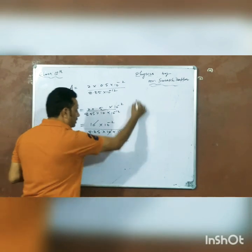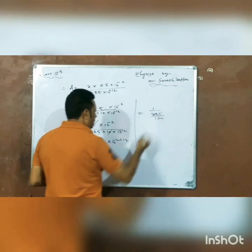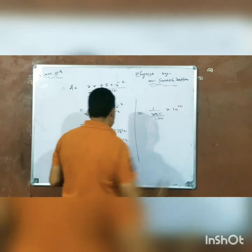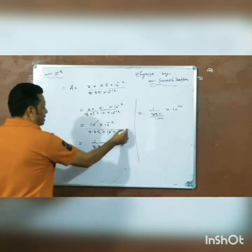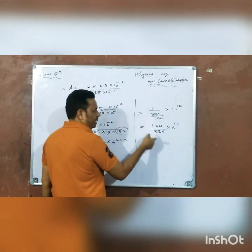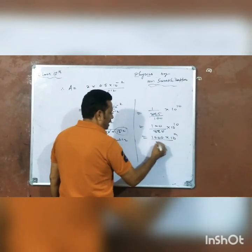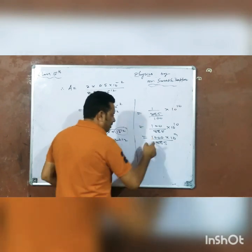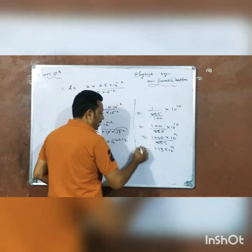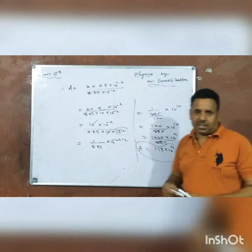This equals 8.85 by 100 times 10 to the power minus 1, which gives us 1.13 times 10 to the power 9. So this is your answer. This is all you need to do. Thank you very much.